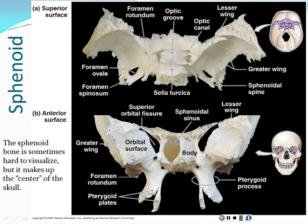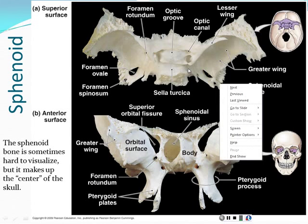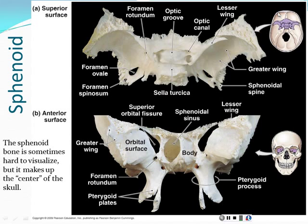The sphenoid bone is my favorite skull bone - it's really cool looking and shaped a little like a butterfly. It has a greater wing here and here, and a lesser wing on the inside. It sits like a bird in the middle of the skull and is the attachment for many other bones. I have a really cool exploded skull in lab where all the bones have been taken apart but still oriented, so you'll see how all the parts come together.